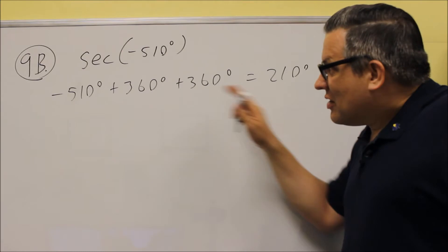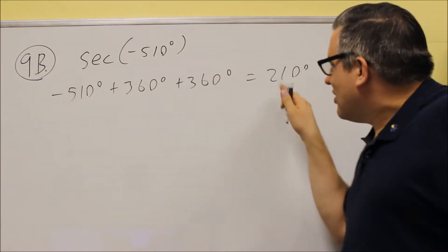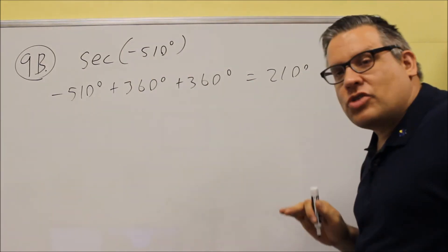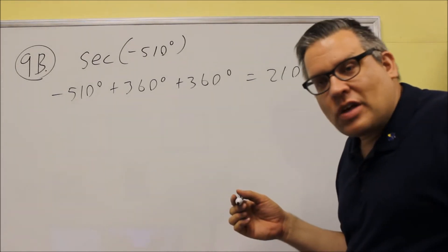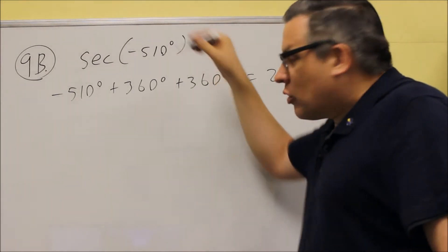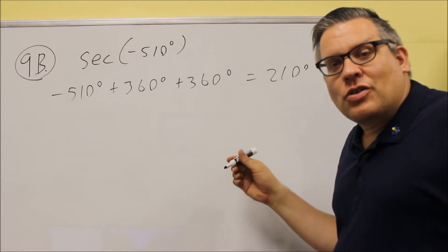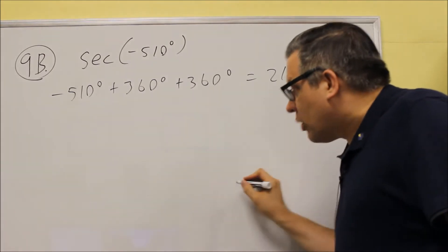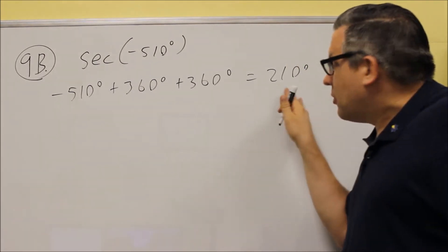So what that's saying is that secant of negative 510 is exactly the same thing as secant 210. We're using the periodic property that says that we're going to arrive at the same exact spot on the unit circle because all we're doing is going around and around and around, and we're going to end up at the same spot.